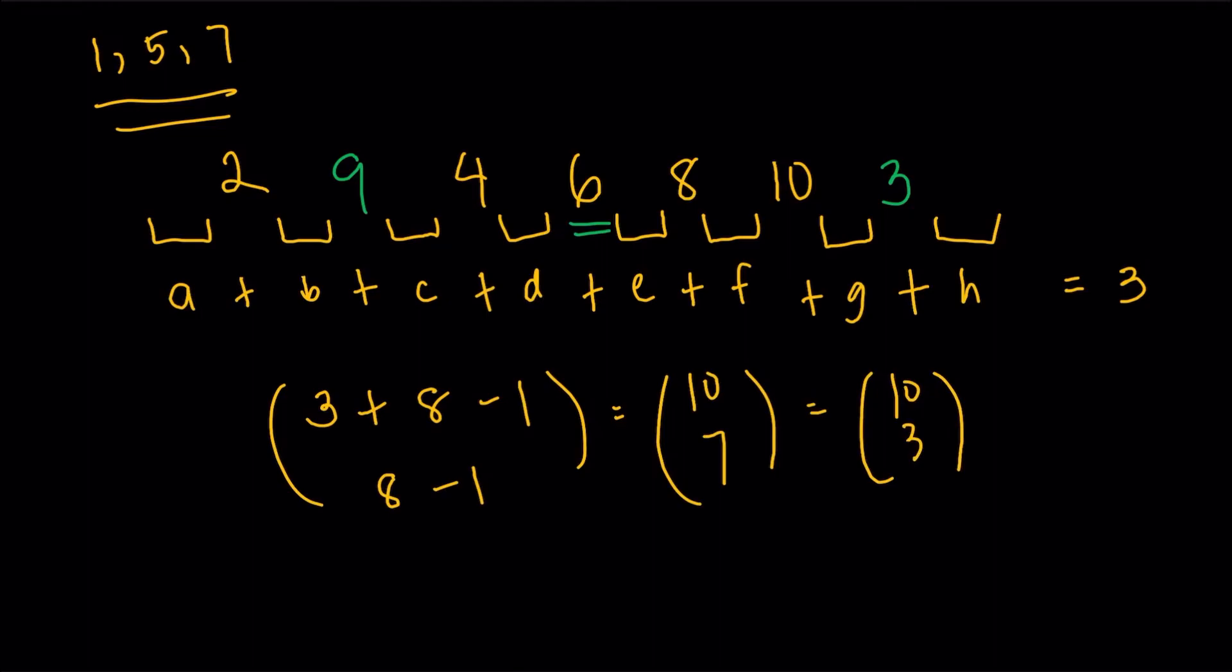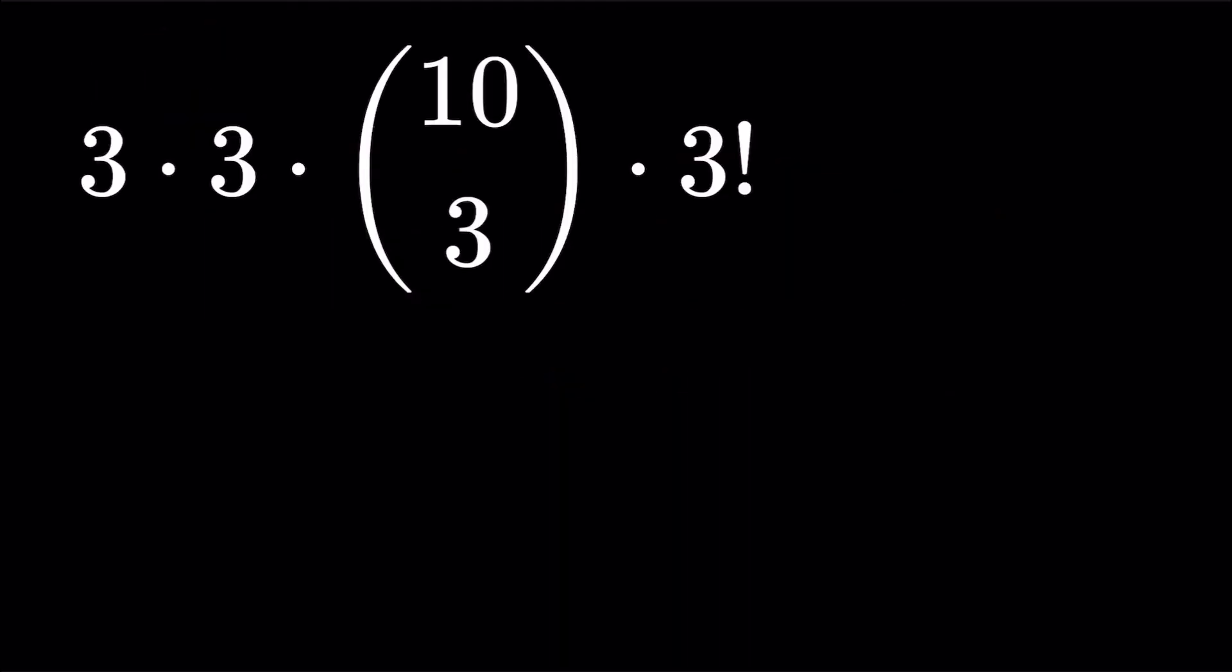Okay. And we know that after we distribute, we're going to take into consideration their arrangement. Now, 1, 5, 7, they're all different. So we just have to do an additional three factorial. So the 10 choose 3, I'm going to do an additional three factorial, right? So this would be the part where we arrange the 1, 5, 7, or put it into the spaces.